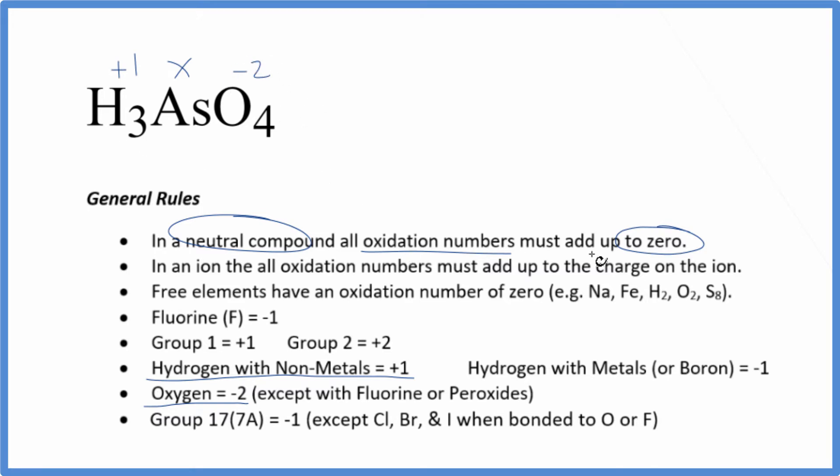The whole thing, we said, adds up to zero. So we could set an equation up. Three times plus one, that's three. Plus, we don't know the arsenic. Four times minus two, that's minus eight. That'll equal zero.